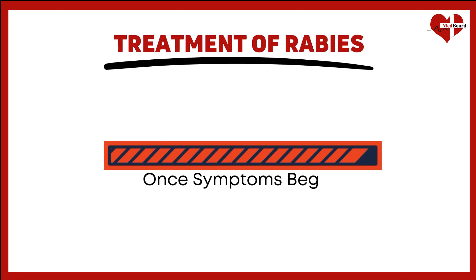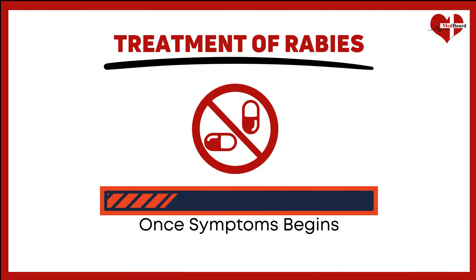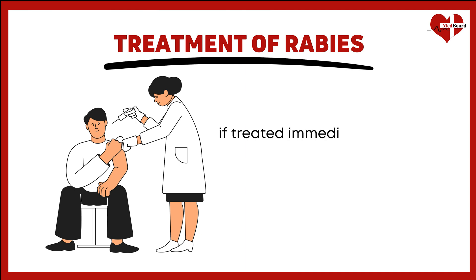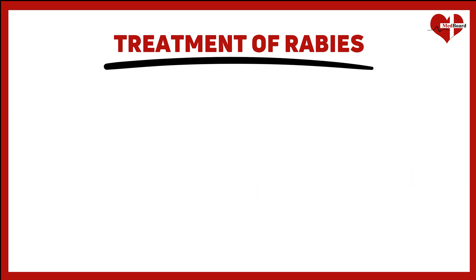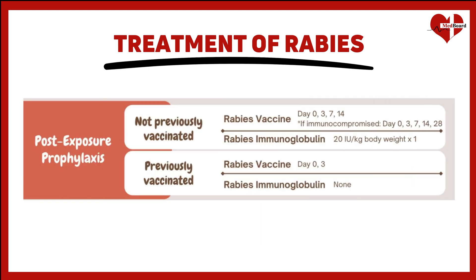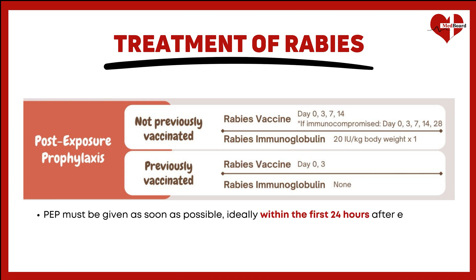Once rabies symptoms begin, there is no effective treatment. However, if treated immediately after exposure, rabies is preventable with post-exposure prophylaxis (PEP). This includes a series of rabies vaccinations and, in some cases, rabies immunoglobulin, which provides immediate passive immunity. PEP must be given as soon as possible, ideally within the first 24 hours after exposure. Delayed treatment significantly reduces its effectiveness.